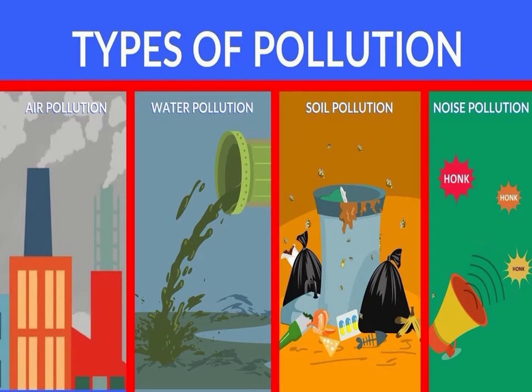There are four types of pollution. The first one is air pollution. Emission of harmful gases from factories and vehicles — like carbon dioxide, nitrogen oxide, and sulfuric oxide — into the environment causes air pollution.